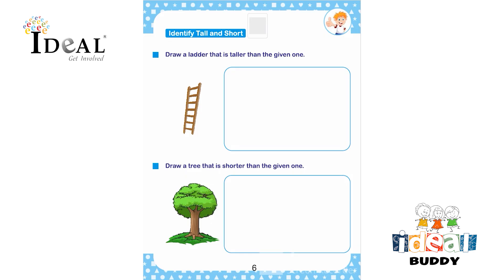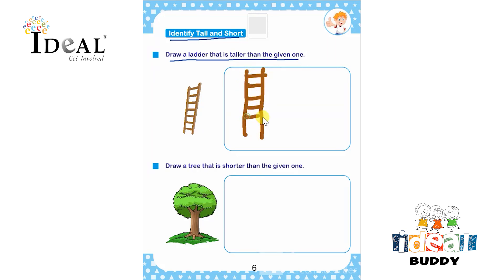Hello everyone. In this page the child will learn about tall and short. Here they have to draw a ladder that is taller than the given one. Let the child draw this at their own pace. This ladder is taller than the given one, and it's a visual comparison for them to see which one is taller and which one is shorter.